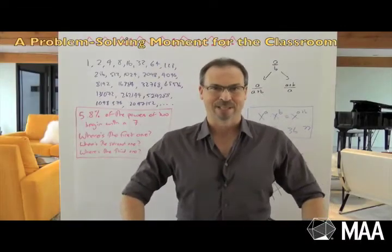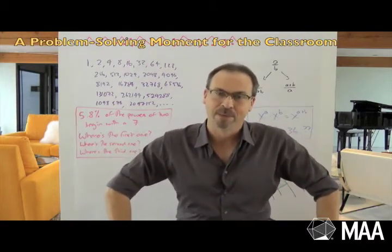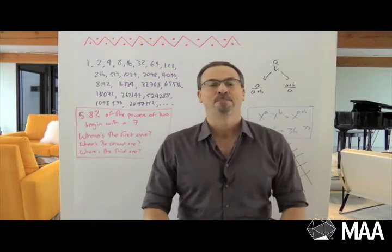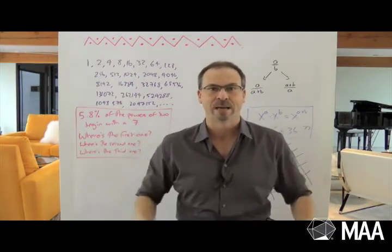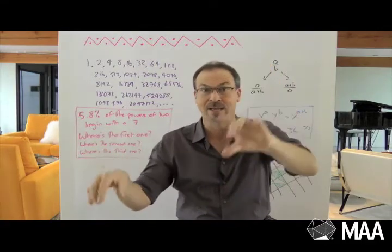Welcome to a problem-solving moment for the classroom. This time I have a very basic question. It's actually one that should come up. We work in a system of mathematics that's base 10. When I say one hundred and seventy-three, I literally say one hundred, seventy (that's actually short for ten), and three.